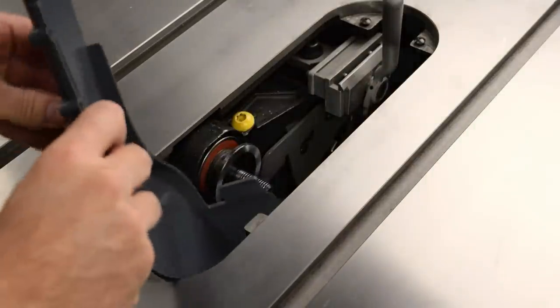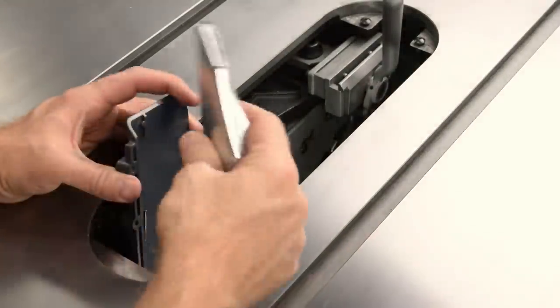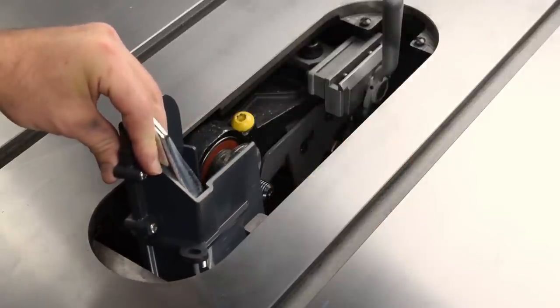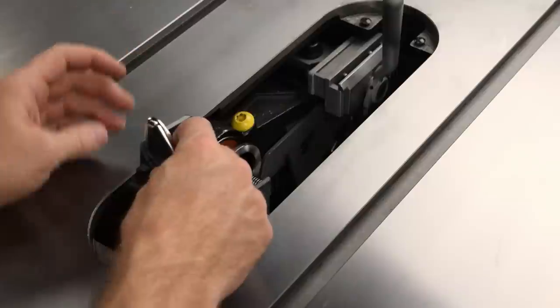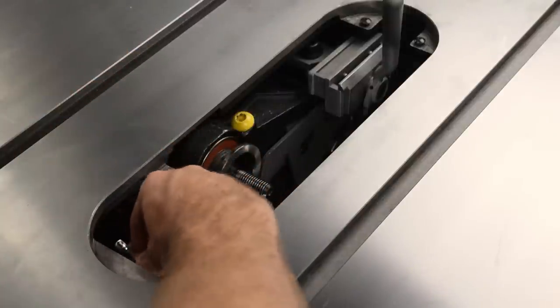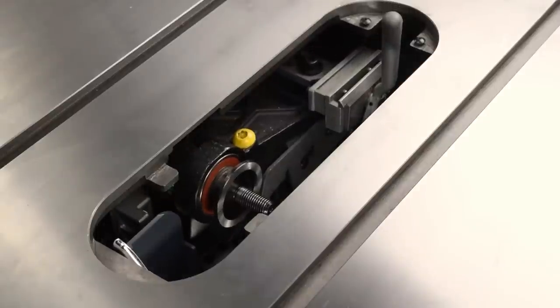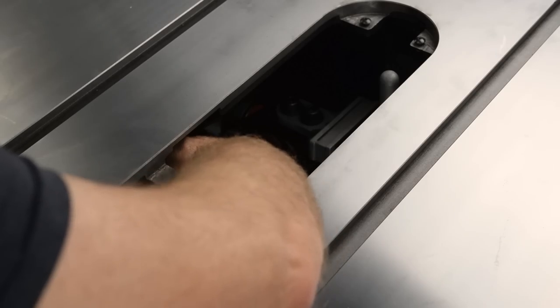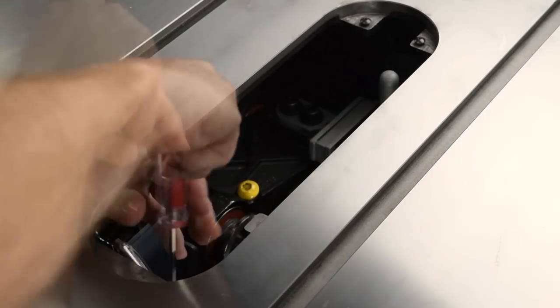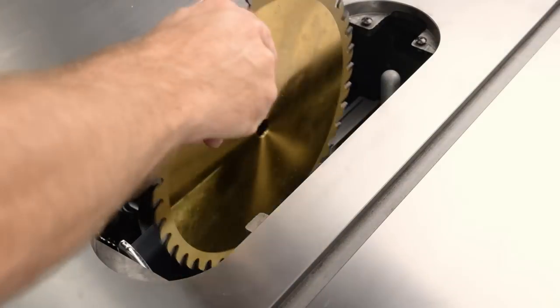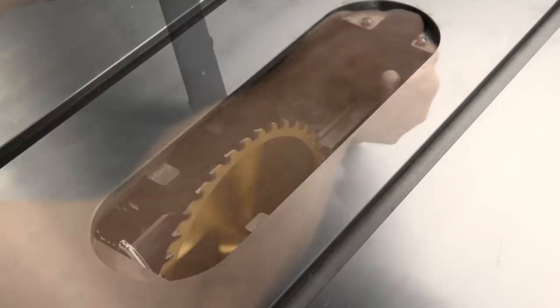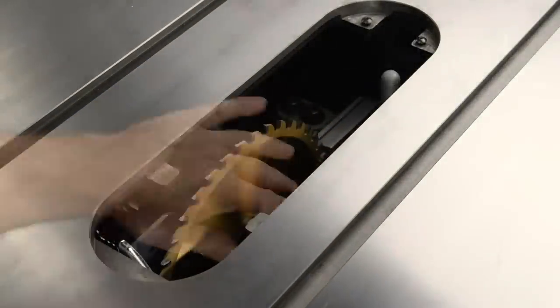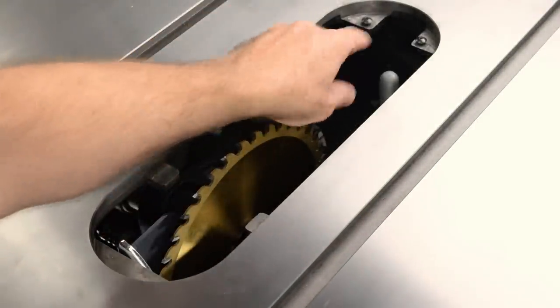Reassemble and replace the dust shroud. Replace the blade. Replace the dust shroud door, riving knife, and table insert.